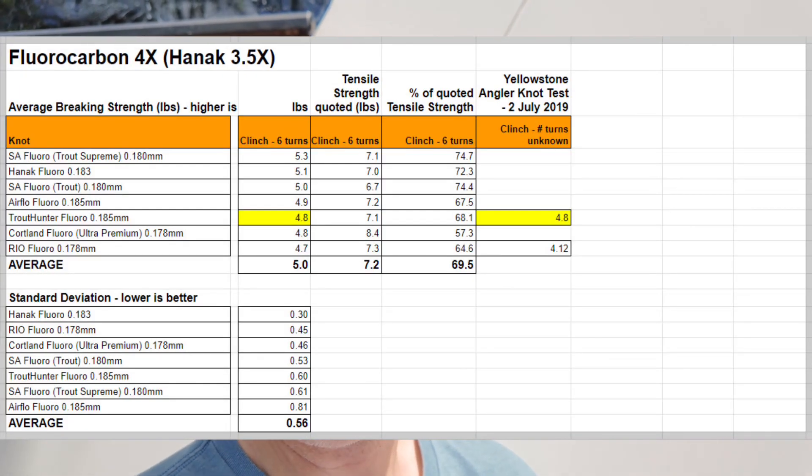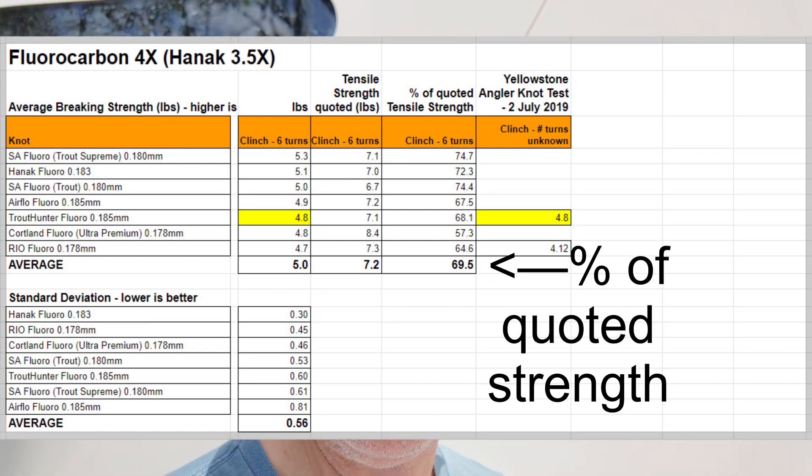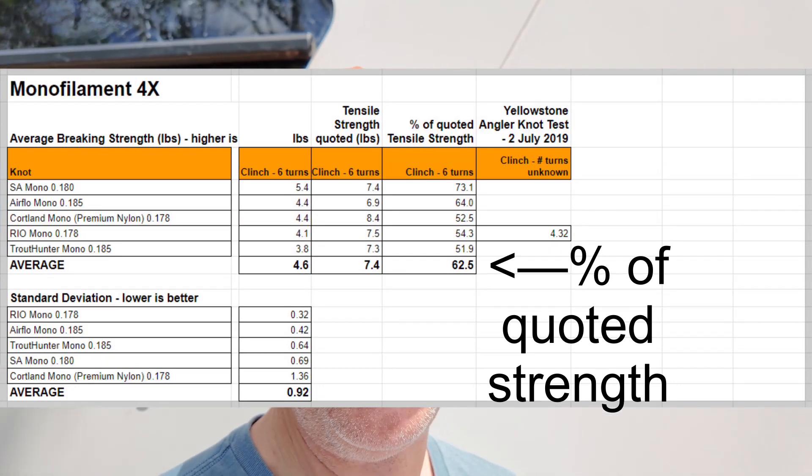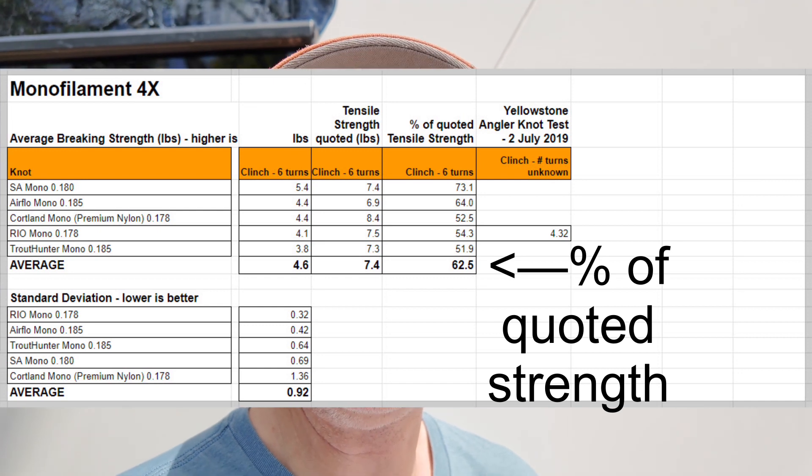First point for fluorocarbon: the fluorocarbon knot strength using a clinch knot is approximately 70% of what it says on the tin, whereas with normal monofilament it's approximately 60% of what it says on the tin.